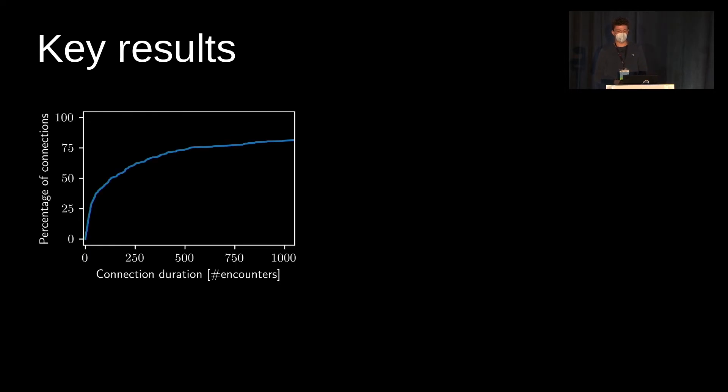Let's look at some key results of our evaluation. Bonito aims to maintain long running connections, so the connection duration is an important performance metric. This plot shows the fraction of connections that lasted for the number of wake-ups on the x-axis. Over all our data sets, half of the connections lasted longer than 125 wake-ups, and 25% even lasted longer than 500 wake-ups. So this shows that our approach is indeed able to maintain these long running connections.